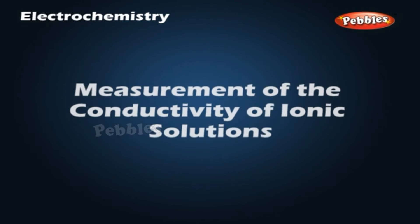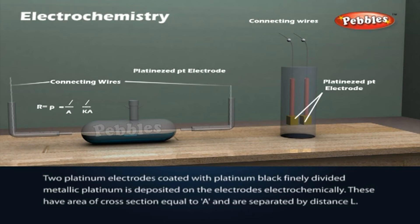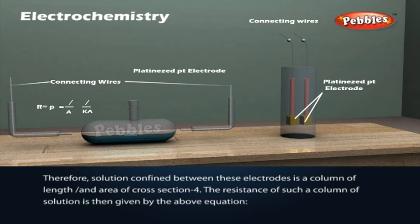Measurement of the conductivity of ionic solution. Two platinum electrodes coated with platinum black, finely divided metallic platinum, are deposited on the electrodes electrochemically. These have area of cross-section equal to A and are separated by distance L. The solution confined between these electrodes is a column of length L and an area of cross-section A. The resistance of such a column of solution is then given by the above equation.